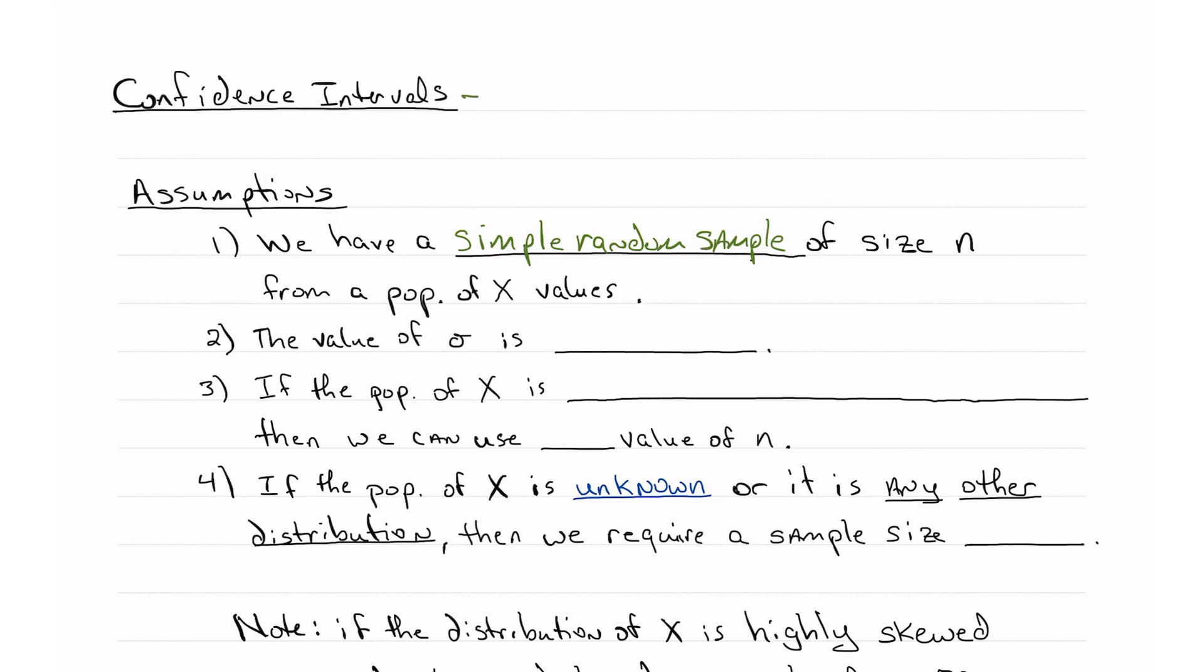So x is whatever our population is, what we're trying to measure. So for the type of confidence interval we're doing now, which is confidence intervals for the mean mu when sigma is known, sigma is the population standard deviation, mu is the population mean. So these are true values for the whole population. Usually we don't know these.